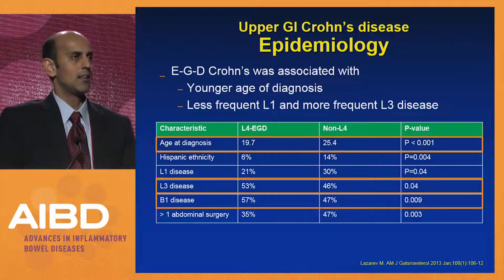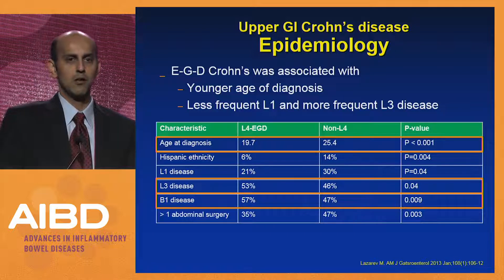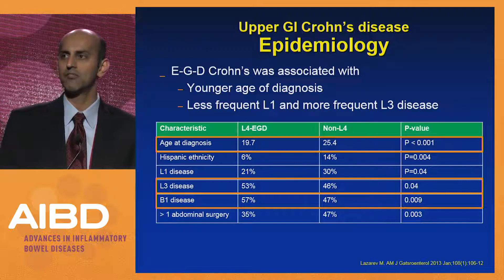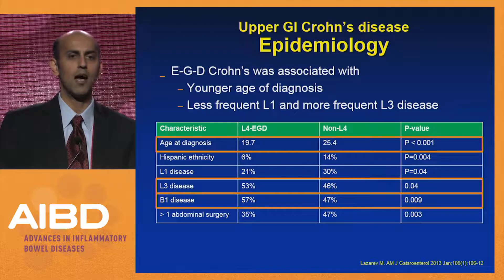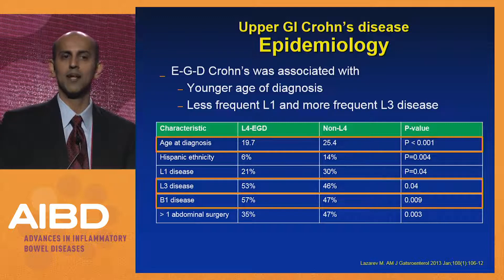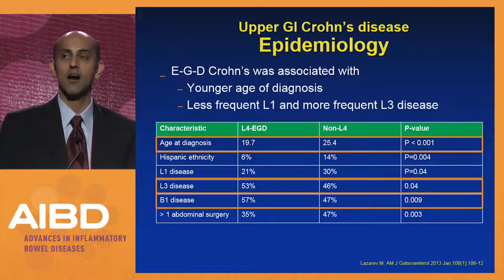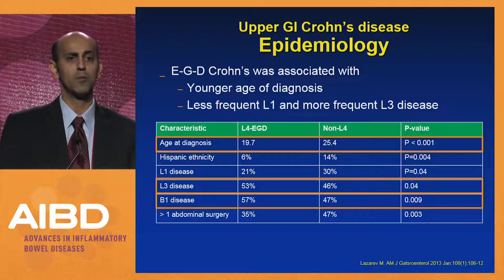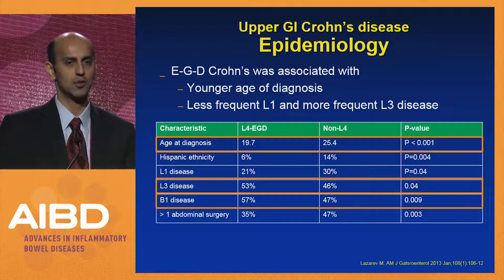They also separated out those who had esophageal gastric duodenal Crohn's from those who had Crohn's disease more commonly in the ileum and colon. There are some interesting differences: patients with EGD Crohn's were likely to be diagnosed at a much younger age — about 20 years for EGD Crohn's versus about 26 years for non-upper GI Crohn's. They were also more likely to have B1 disease — the non-penetrating, non-stricturing phenotype.